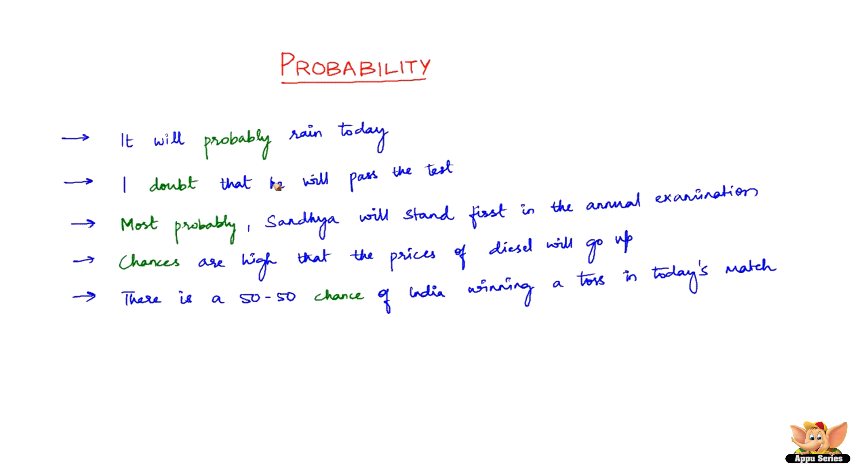So, probability started with gambling, because gambling is a place where you actually need probability. What is the probability that I'm going to win this? What is the probability that he's going to lose that? So, it started off with gambling, but it has been extensively used in the fields of physical sciences, commerce, biological sciences, medical sciences, weather forecasting, etc. and lots more.